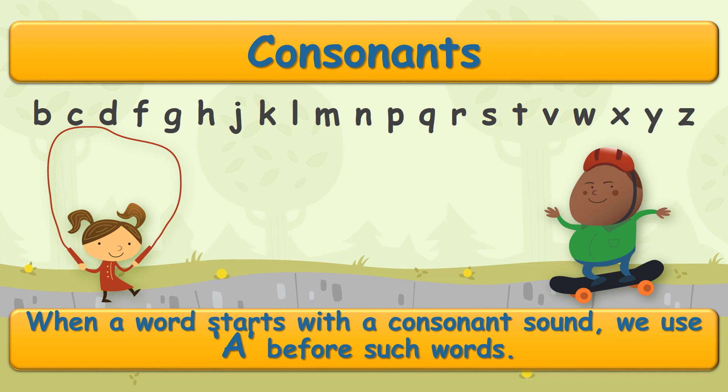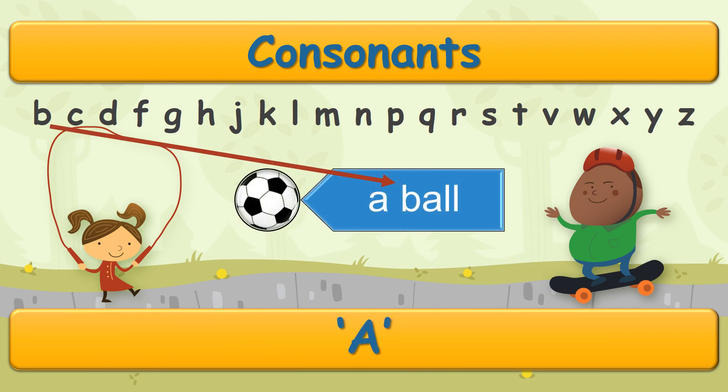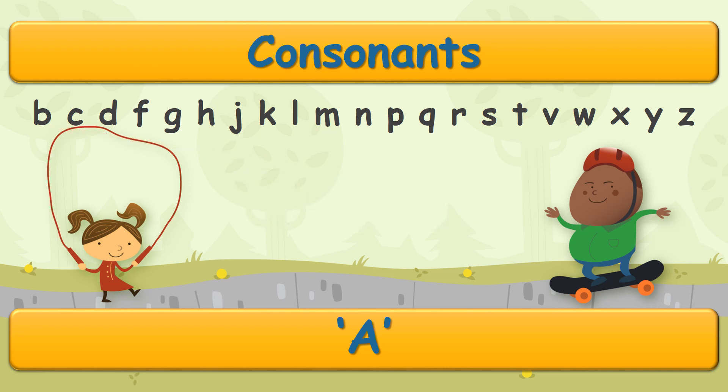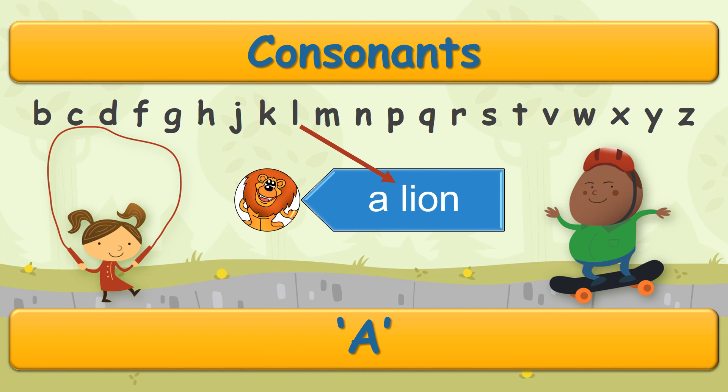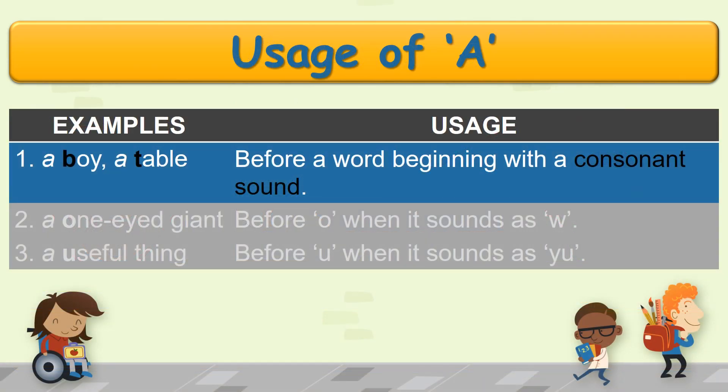So that was about the five vowel alphabets. Now the rest of the alphabets are called consonants. When a word starts with a consonant sound, we use 'a' before it. Like consonant B has a sound 'b', therefore we say: a ball, a lion, a tree. 'A' is placed before boy and table as they begin with a consonant sound B and T.